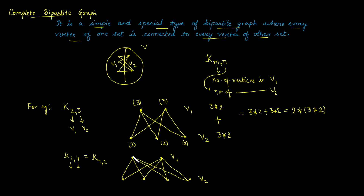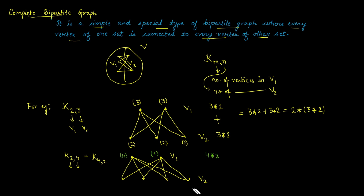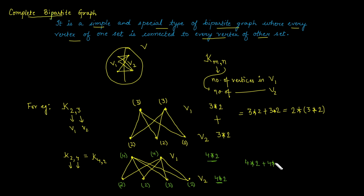For K2,4: each of the 2 vertices in V1 has degree 4, so total degree for V1 is 4 times 2. Each of the 4 vertices in V2 has degree 2, so total degree for V2 is 4 times 2. The total degree of the graph is the sum, equal to 4 times 2 plus 4 times 2, which can also be written as 2 times 4 times 2.